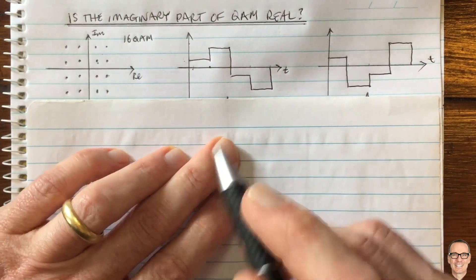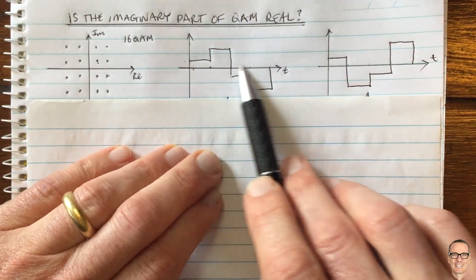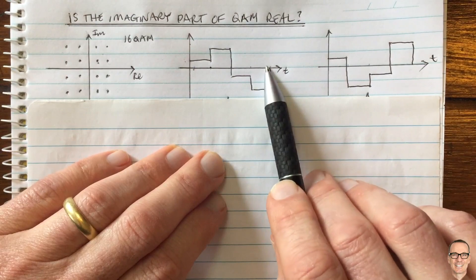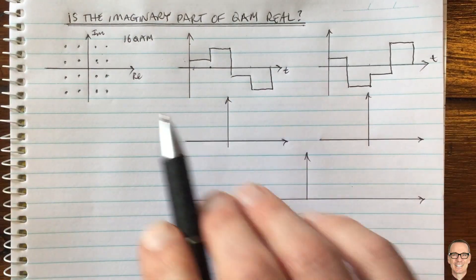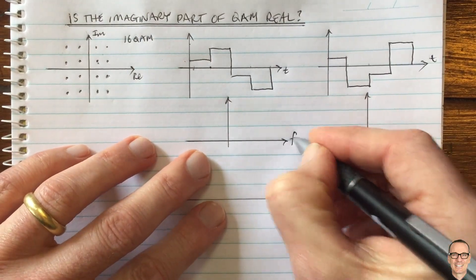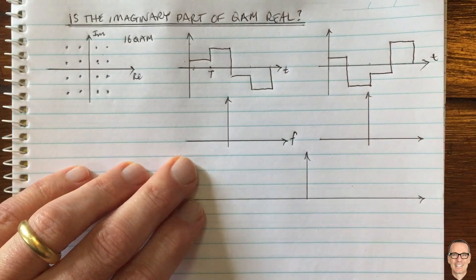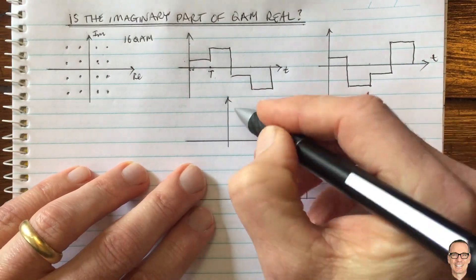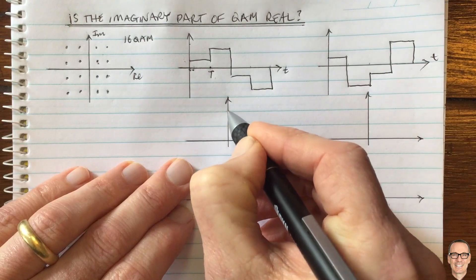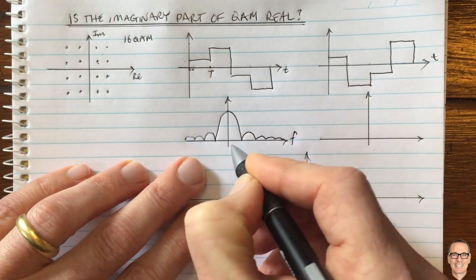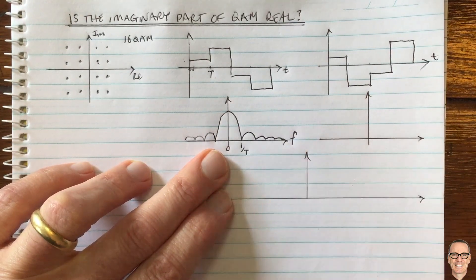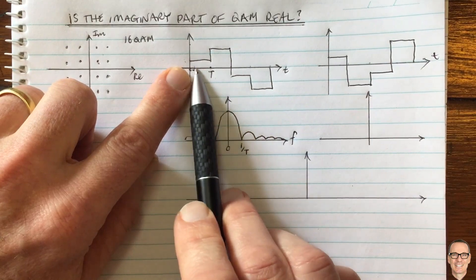How can imaginary be real? We have the amplitude in one dimension and the amplitude in the other — that's the best way to think of it. This is a baseband signal. The Fourier transform of this baseband signal: if the symbol duration is capital T, then in the frequency domain we get a sinc function — because the Fourier transform of a square pulse is a sinc — and the bandwidth of positive frequencies at baseband is one divided by T.